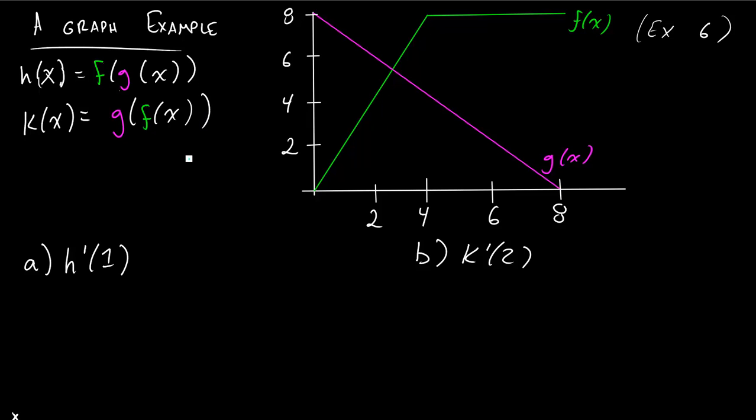And so how are we going to do this problem? So let's start out by writing out what it actually wants us to find. It wants us to take the derivative of f of g of x, right? And not just x, but it wants us to take the derivative at 1.